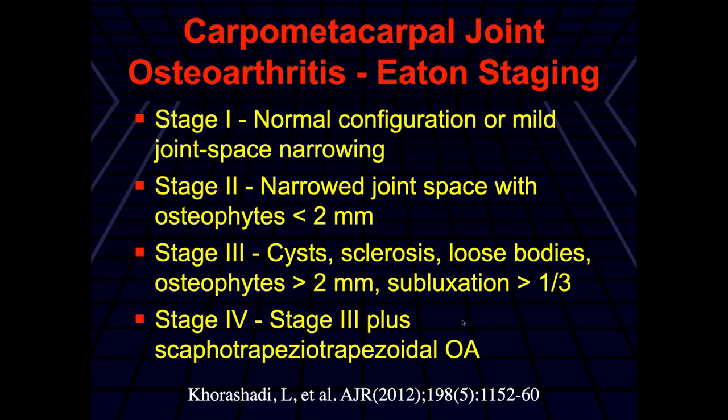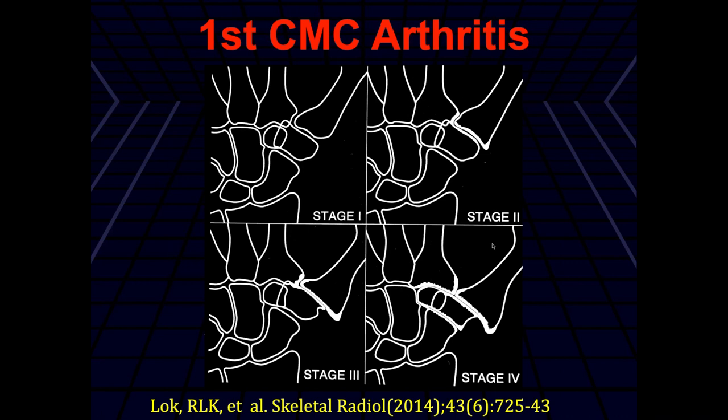I bring this classification up because if you're working with a surgeon who really uses it, you need to learn and use it. But there are so many different classifications out there — for articular cartilage alone there are at least nine, most described for research purposes rather than clinical purposes. It's better to describe the pertinent findings and let the referring physicians decide how to treat the patient. This shows progressive degenerative disease: joint space narrowing, subchondral irregularity, and involvement of the triscaphe joint going forward.